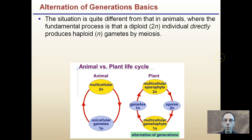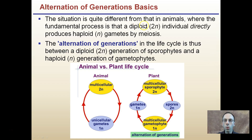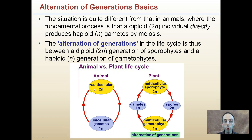So what are the basics of this process? The situation is quite different from that in animals. In animals, the fundamental process is that a diploid — remember 2n — individual directly produces haploid or n gametes by meiosis. We see that pictured here: a multicellular 2n organism directly producing unicellular gametes, which fuse together to form again the multicellular 2n organism.